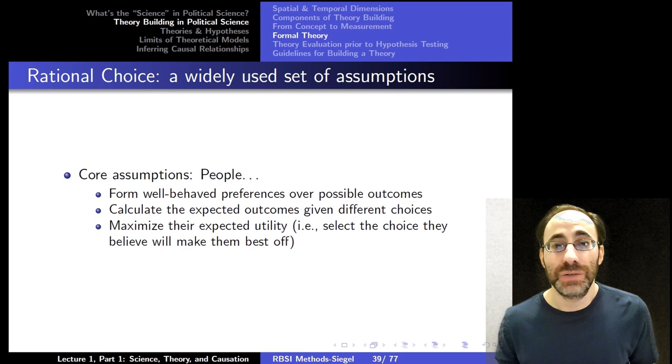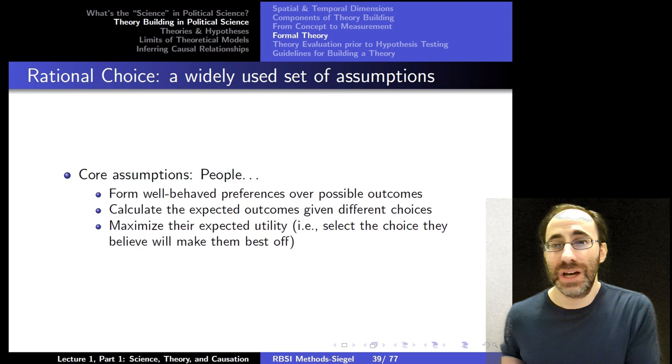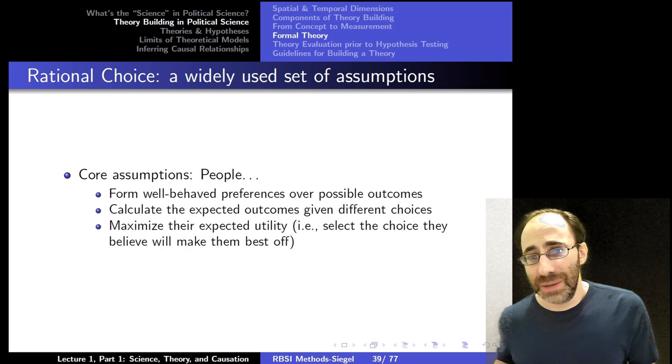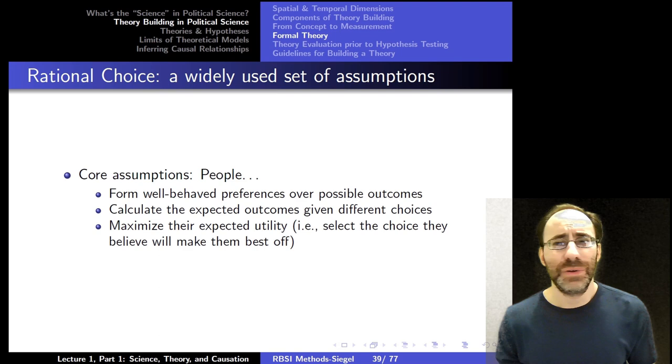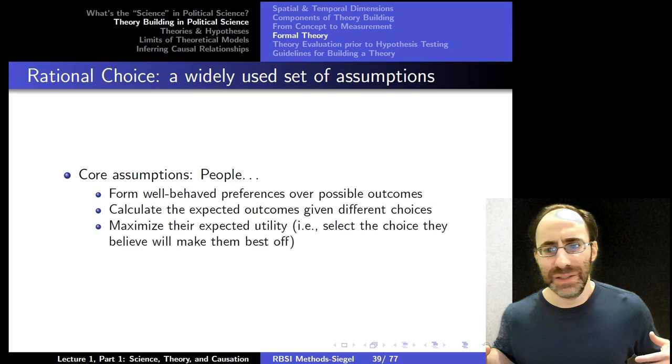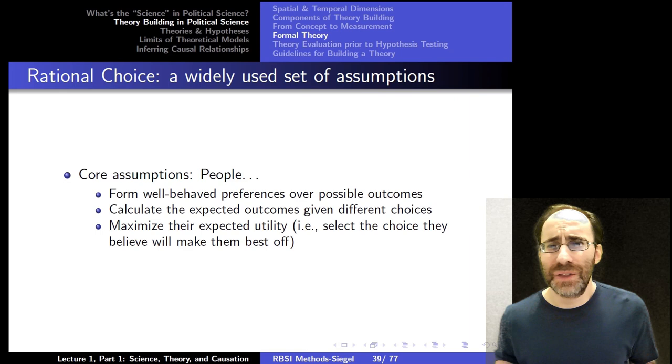The most commonly used set of assumptions in political science is rational choice assumptions owing to the basic influence of economics on political science theorizing. People often mistake what rational choice assumptions mean exactly. It doesn't mean everyone's rational in a strict sense and only cares about one thing, or has no emotional attachment.